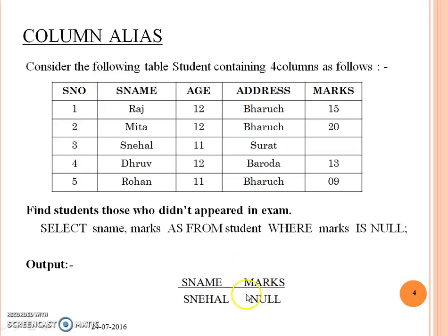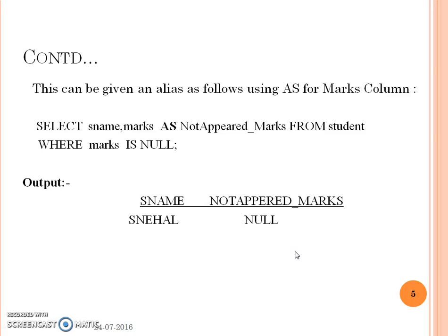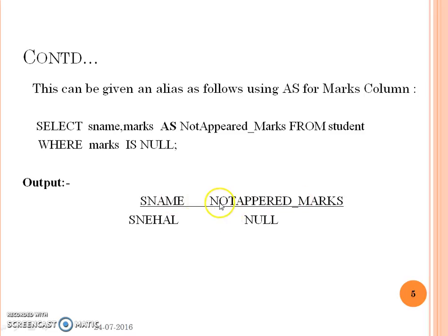Now if I want to temporarily rename this column while executing and checking the result, I could write: SELECT s_name, marks AS not_appeared_marks FROM student WHERE marks IS NULL. In this case the column name is temporarily renamed as not_appeared_marks.